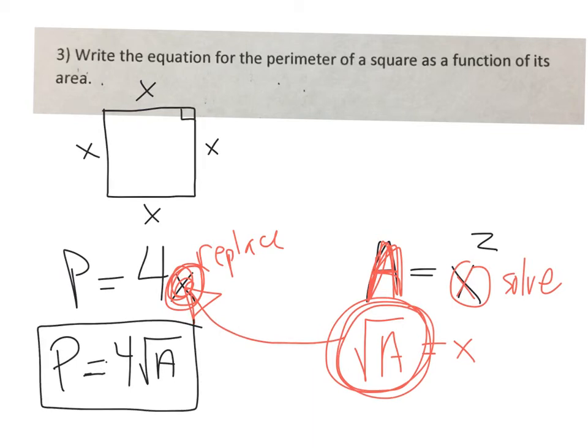To go directly from area to perimeter, that would be the formula that you use. Without that formula, you would first have to figure out what the side length was, and then use the side length to find perimeter. With this formula, we can go directly from area to perimeter.